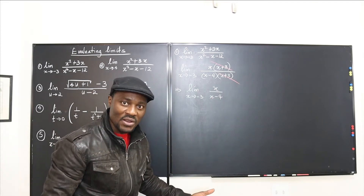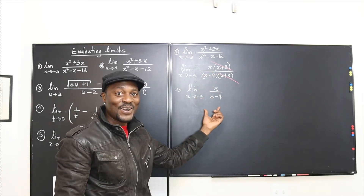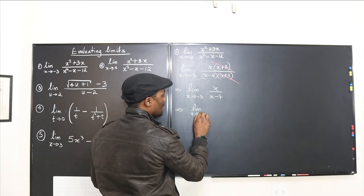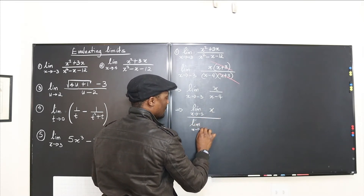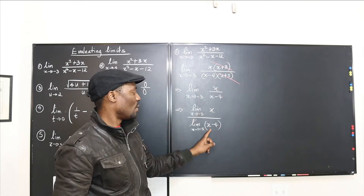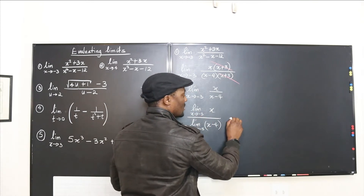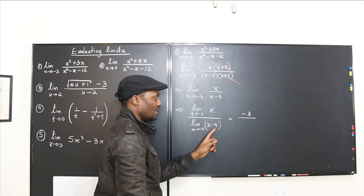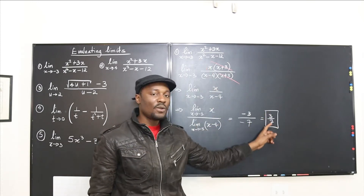Now I can take the limit, applying limit laws. For a rational expression, the limit law says it's the limit of the top divided by the limit of the bottom. So the limit as x goes to negative three of x is negative three, and the limit of (x minus four) is negative three minus four, which is negative seven. So the limit is three over seven.